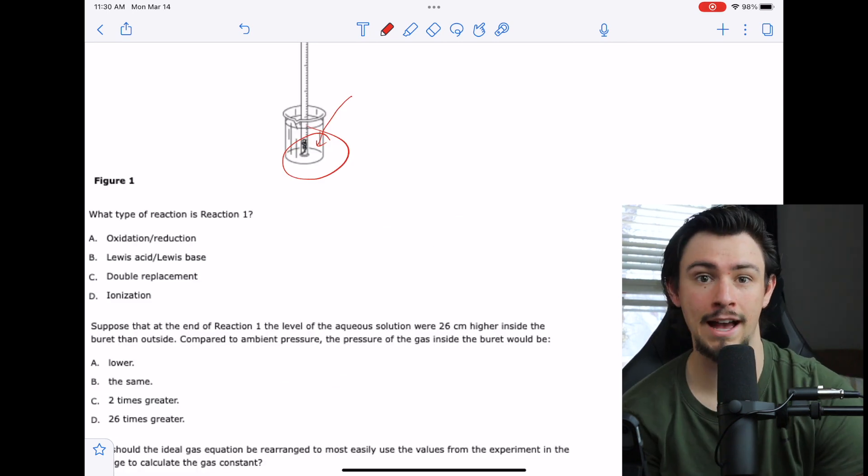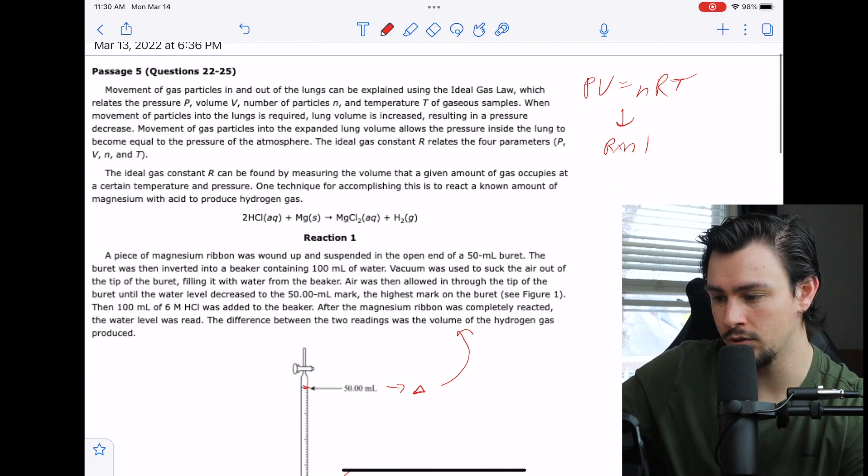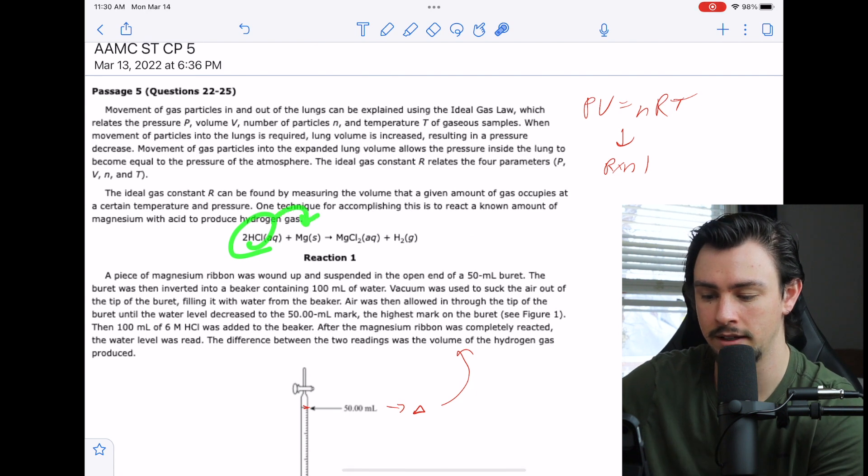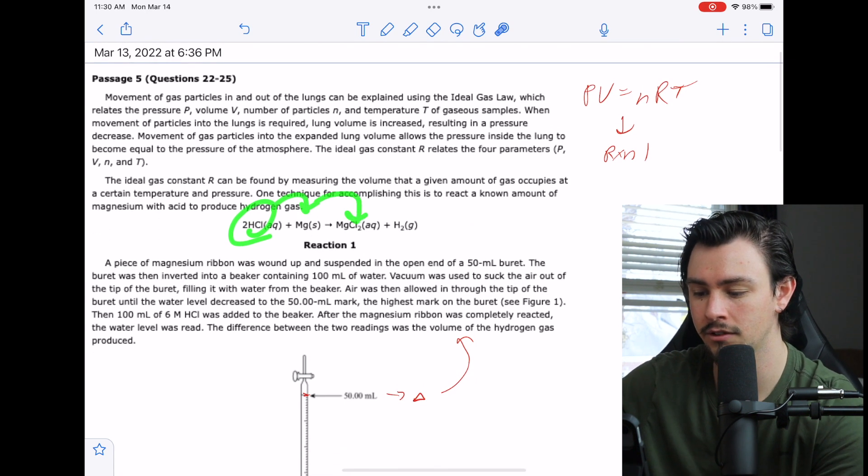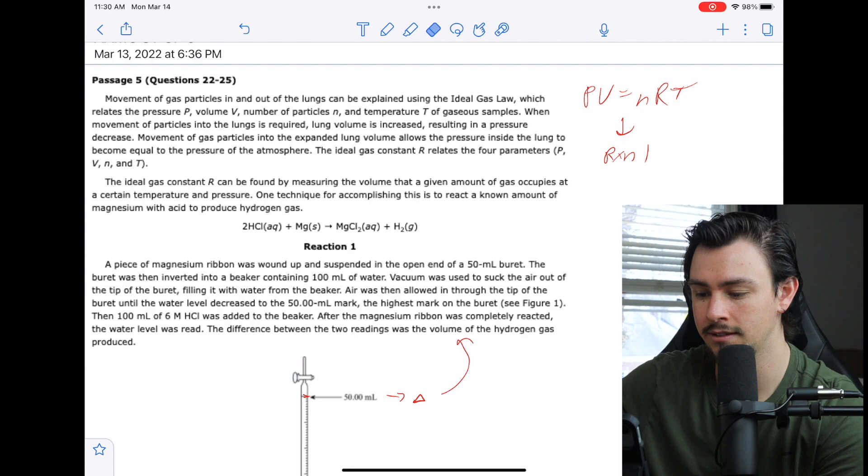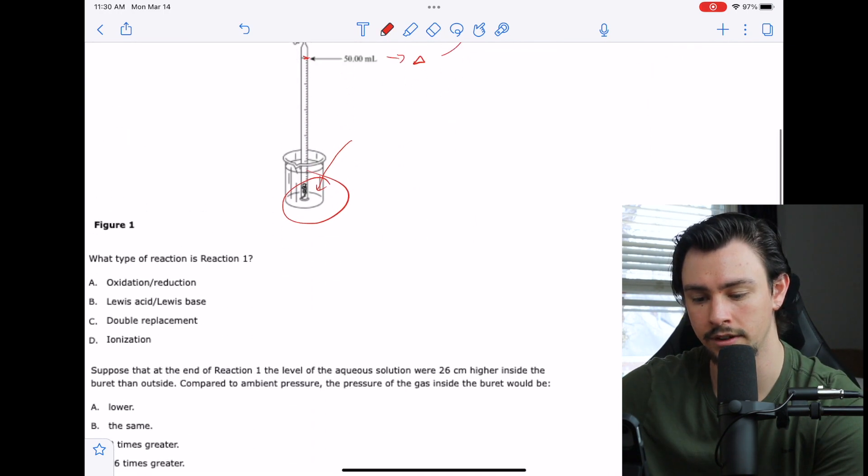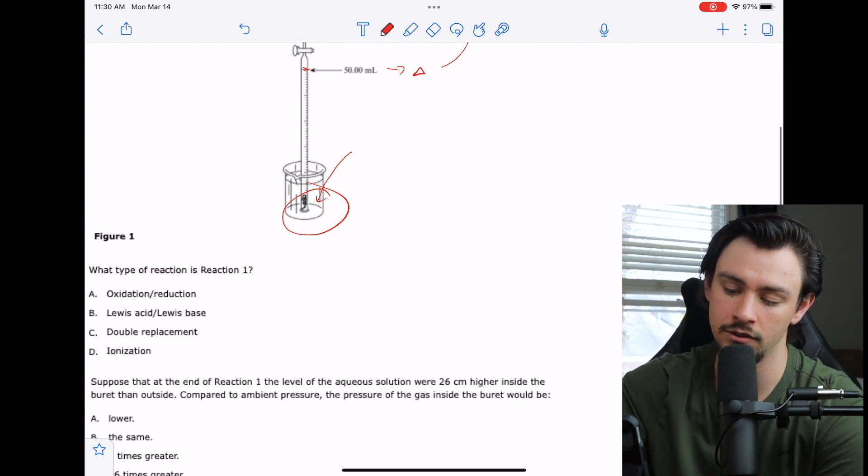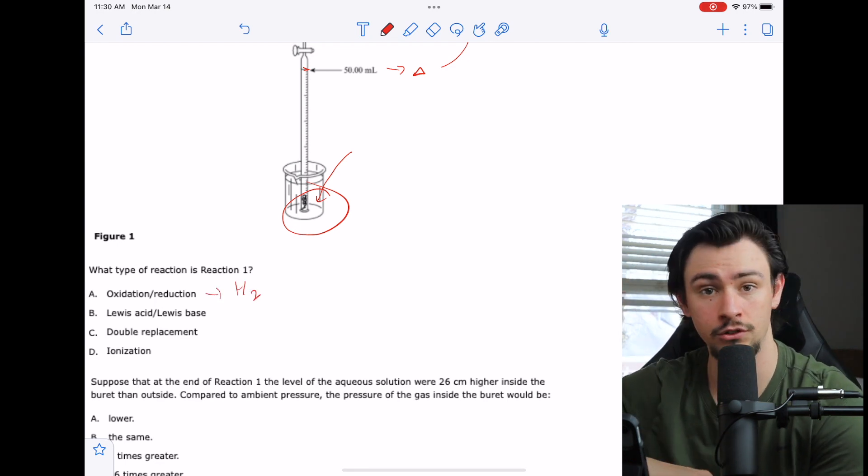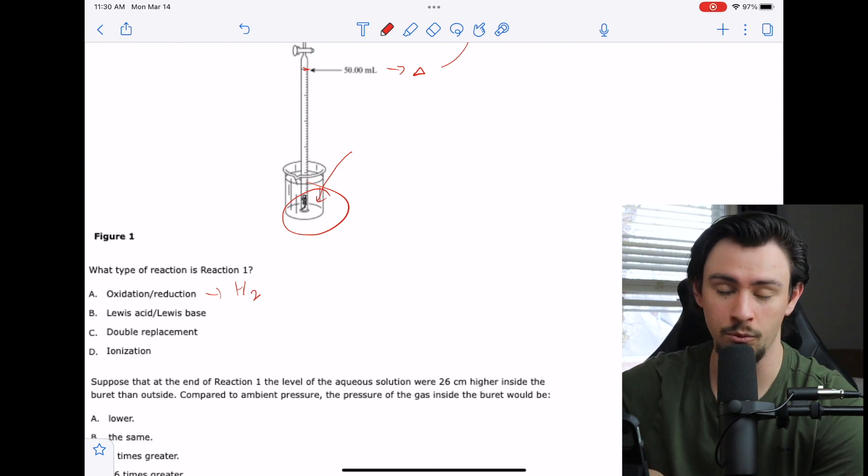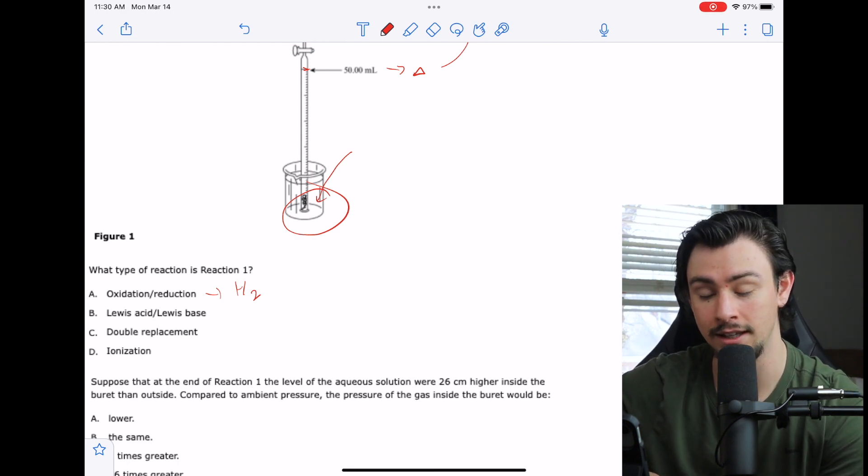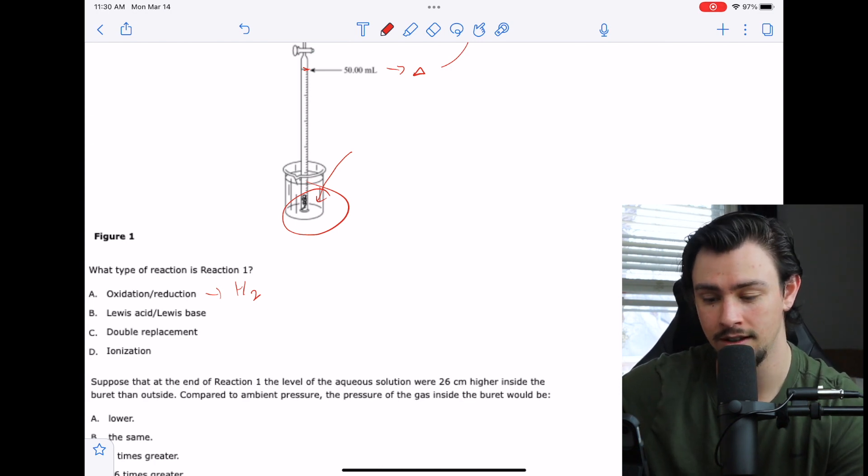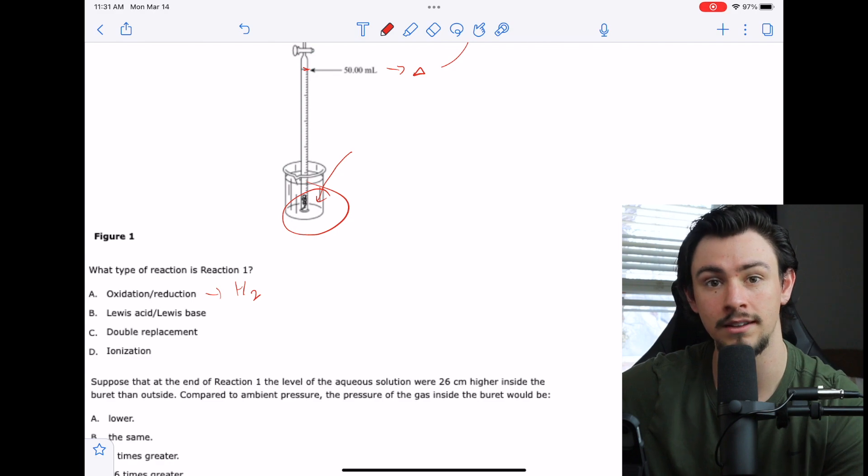The first one says, what type of reaction is reaction one? All right. So that is referencing this right here, which we start with an acid. We react it with this magnesium metal and we get magnesium dichloride and we get hydrogen gas. Let's look at the answer choices and see what they wanted here. Which type of reaction is this? Is it an oxidation reduction reaction? Okay. So you usually see hydrogens moving here and it's also one of the most tested reactions on the MCAT. It probably is the most tested reaction on the MCAT.